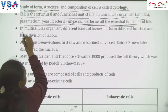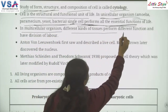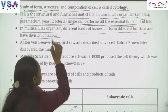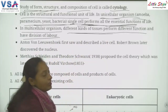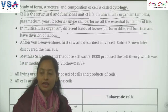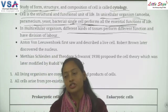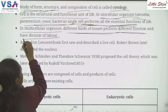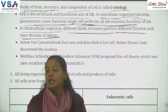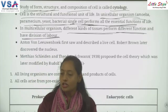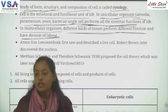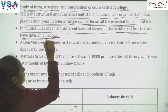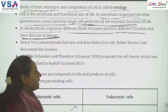When we talk about multicellular organisms, different kinds of tissue perform different functions and there is division of labor. In multicellular organisms, we have different types of tissues with different functions. Because multi means more than one cell, division of labor occurs in multicellular organisms.